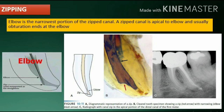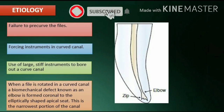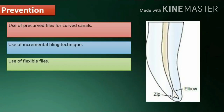A zipped canal is apical to the elbow, and usually obturation ends at the elbow. Etiology includes failure to pre-curve the files, forcing instruments in a curved canal, and use of large stiff instruments to bore out a curved canal. When a file is rotated in a curved canal, a biomechanical defect known as an elbow is formed coronal to the elliptically shaped apical seat. This is the narrowest portion of the canal.